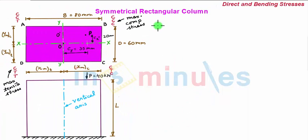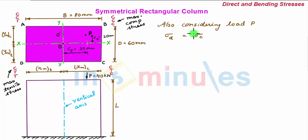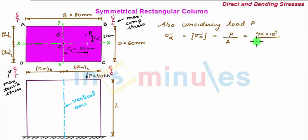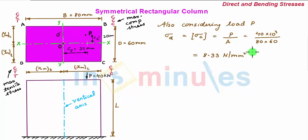Also considering the axial load P, the direct stress sigma_d, which is the compressive stress, is given as P divided by A. So P is 14 × 10³ divided by A, which is B multiplied by D. This gives the value as 8.33 N/mm², and it is always compressive.